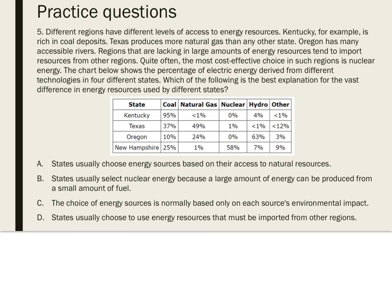States usually choose energy sources based on their access to natural resources. Kentucky and surrounding states contain large amounts of coal, creating an incentive to use it. Texas produces more natural gas than any other state. Oregon has many rivers due to high rainfall, making large-scale hydroelectric power possible. Many states poor in energy resources, such as New Hampshire, must import them from other regions. The answer is A: states usually choose energy sources based on their access to natural resources.